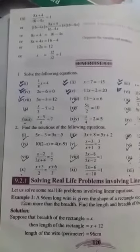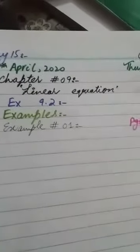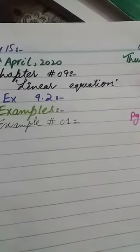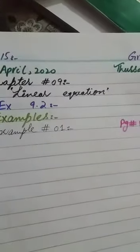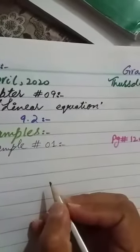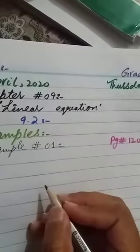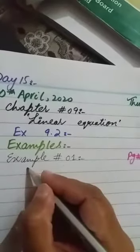As you know, a rectangle has four sides — two sides are equal and the other two sides are equal. We need to find the length and breadth of the rectangle. According to the given data, we will find the length and breadth.